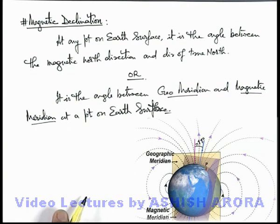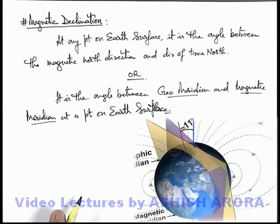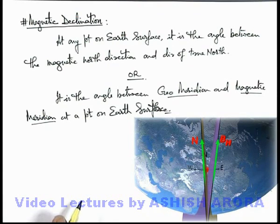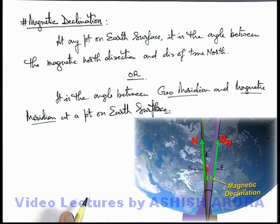If we look at this picture, at any point on earth's surface we can see the magnetic and geographic meridian. The true north direction is contained in the plane of geographic meridian, and the horizontal component of earth's magnetic field, B-H, is contained in the plane of magnetic meridian. The angle between the two is termed as magnetic declination, and it varies from different point to different point on earth's surface.